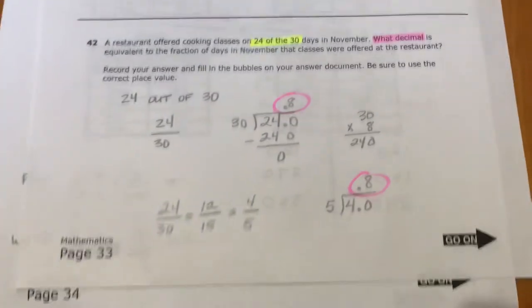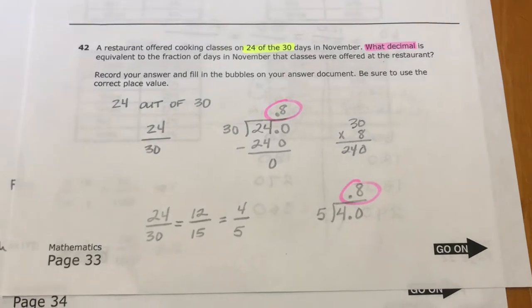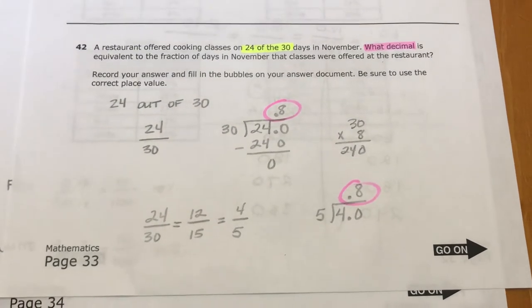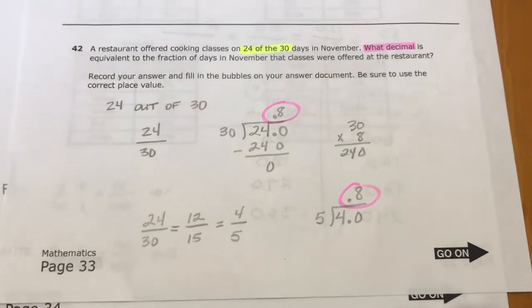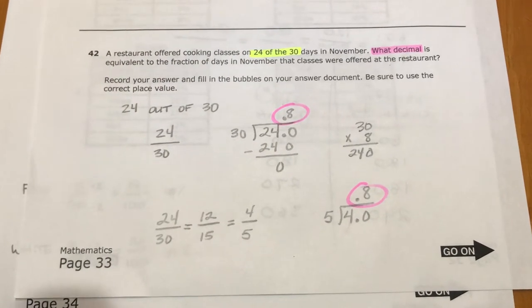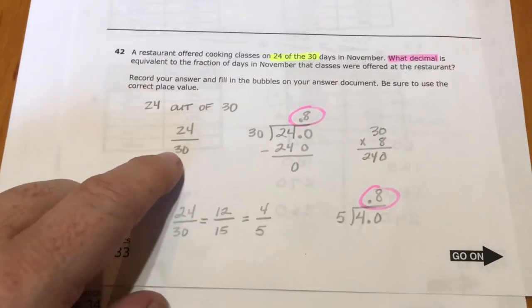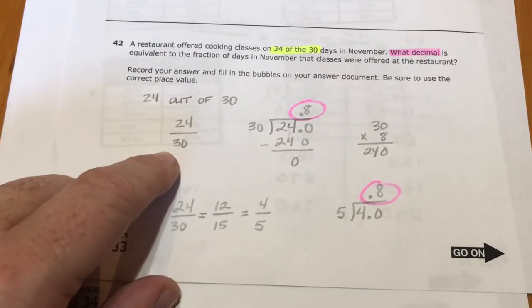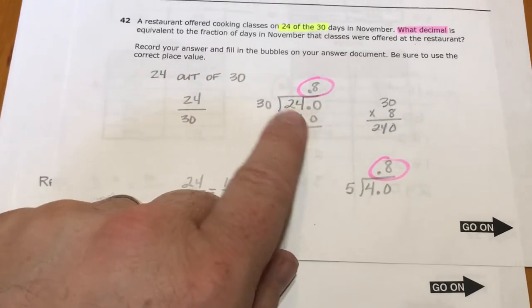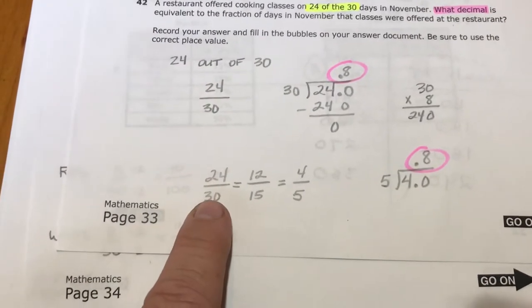Number 42: a restaurant offered cooking classes on 24 of the 30 days in November. What decimal is equivalent to the fraction of days in November the classes were offered at the restaurant? So it's 24 out of 30, so it's a fraction 24 over 30. You can just divide it, 24 divided by 30, and you'll get 0.8.